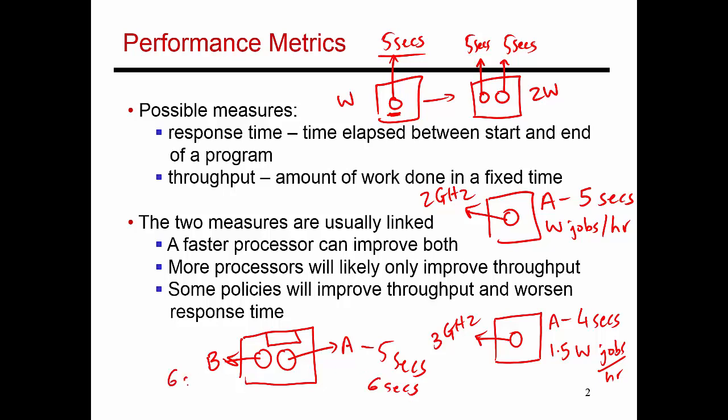And B also finishes in six seconds because it's identical to A. So these are threads that if they ran by themselves, they would take five seconds to finish. But now when they run with somebody else, they both take six seconds to finish. So the response time of each individual program has been lowered. But with this policy of running multiple threads at the same time, my overall throughput has gone up.